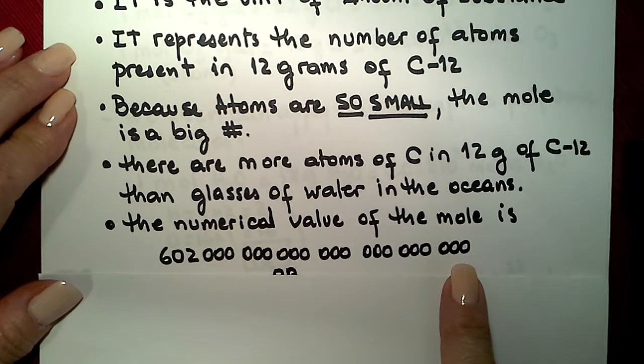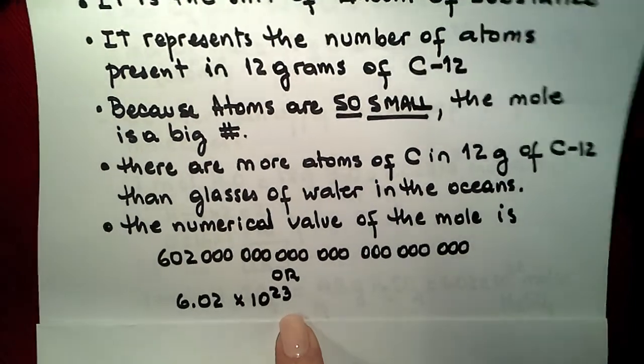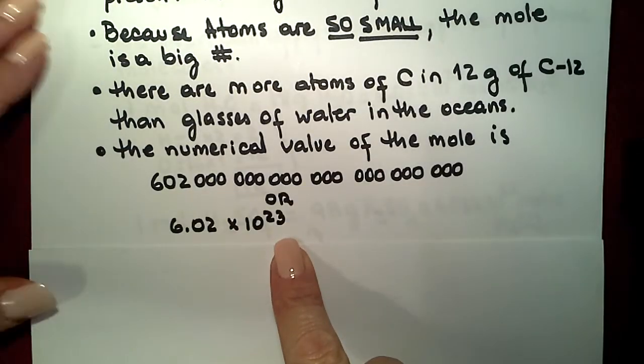That means 21 zeros. If we express that in scientific notation, it's going to be 6.02 times 10 to the 23rd atoms or molecules or particles.